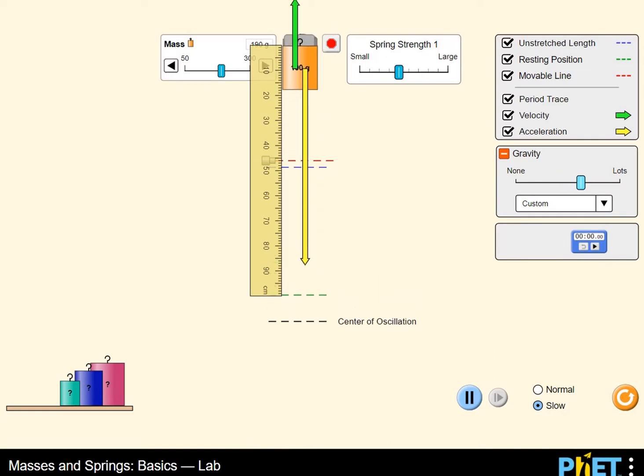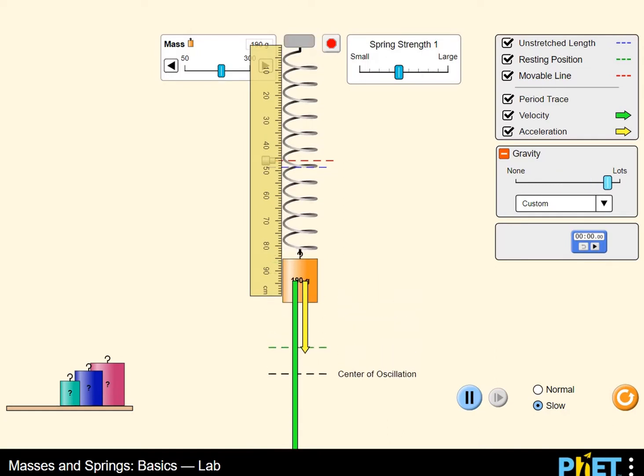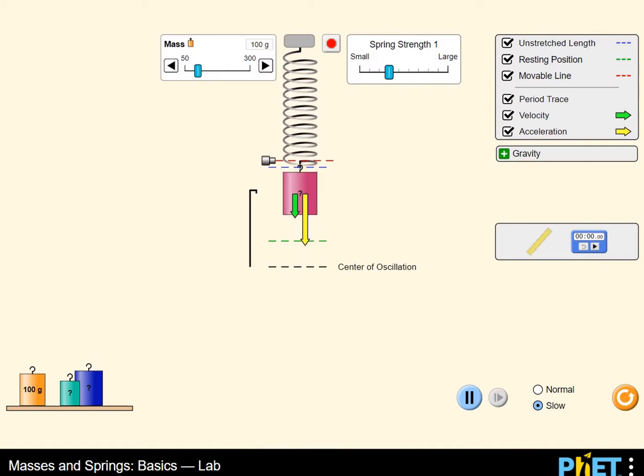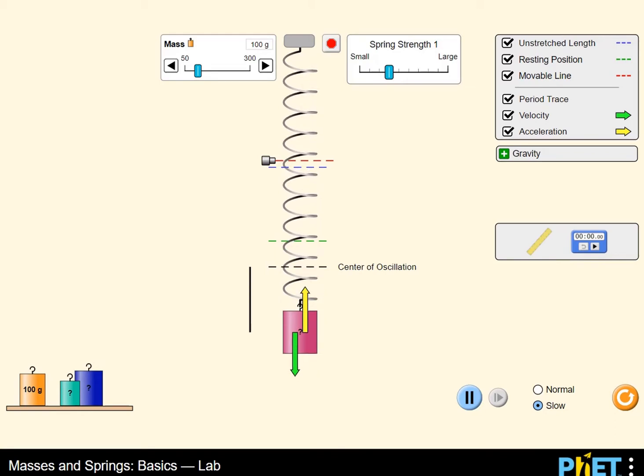You can drag the ruler to the spring to measure it. Clicking on the normal or slow speed is important for better observation that will help you analyze the simulation.